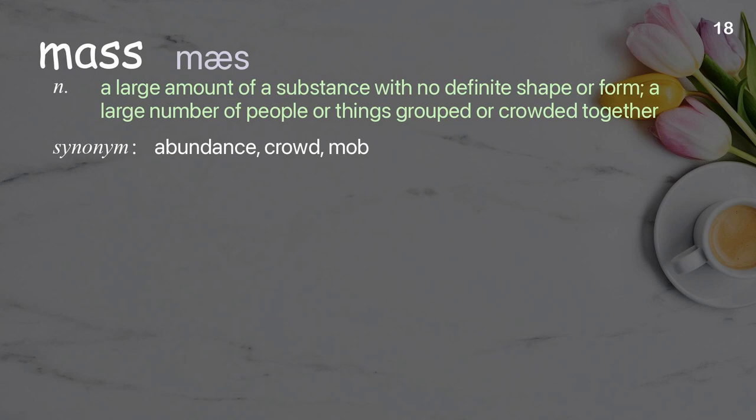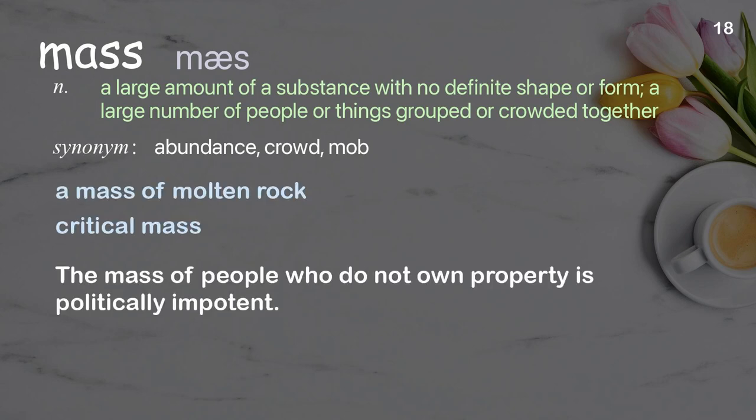Mass: a large amount of a substance with no definite shape or form; a large number of people or things grouped or crowded together. Examples: a mass of molten rock, critical mass. The mass of people who do not own property is politically impotent.